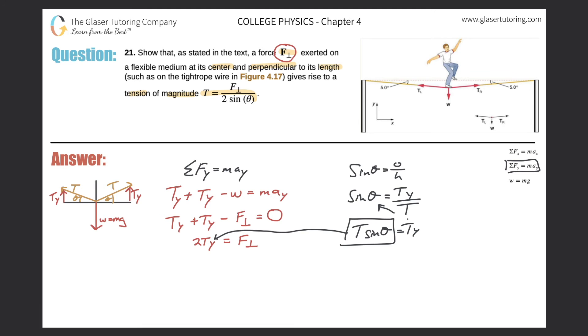So I can simply plug it in. Now I get 2 times tension times the sine of theta equals F perpendicular. I take a look at the top here - I want to solve it now for just the tension. Notice the 2 and the sine of theta are multiplied to the tension, so I can divide both of them out.